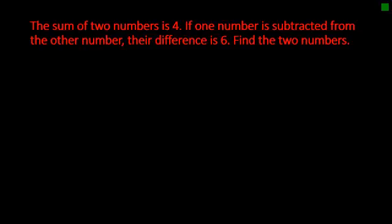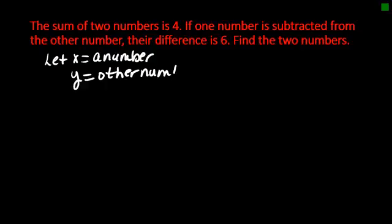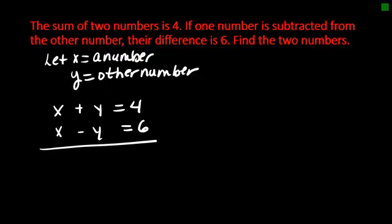The sum of two numbers is four. If one number is subtracted from the other number, their difference is six. Let X equal a number and let Y be the other number. Their sum is four, their difference is six.